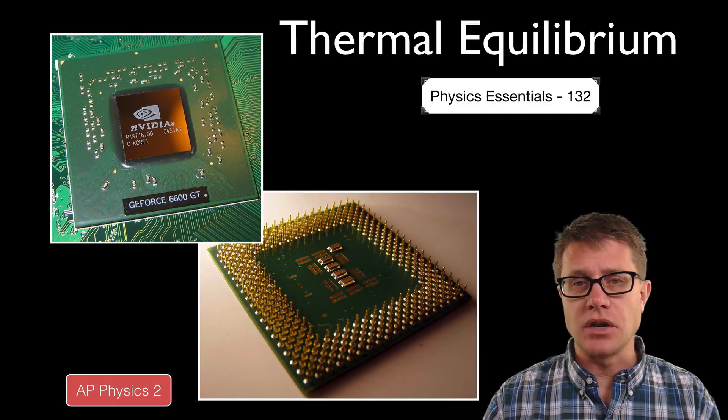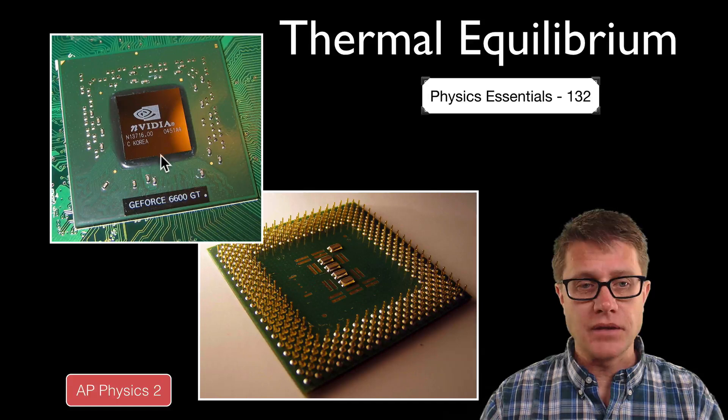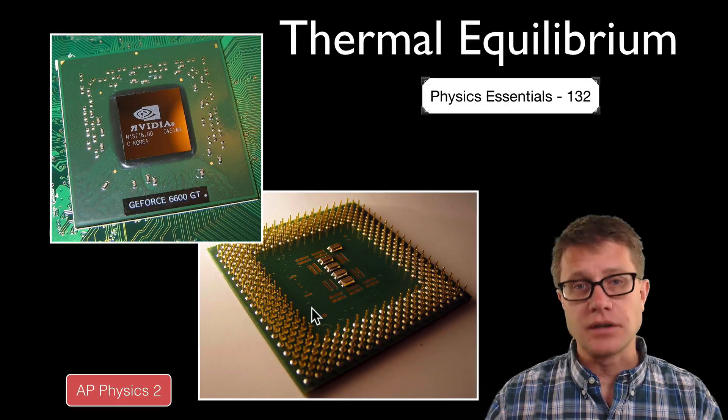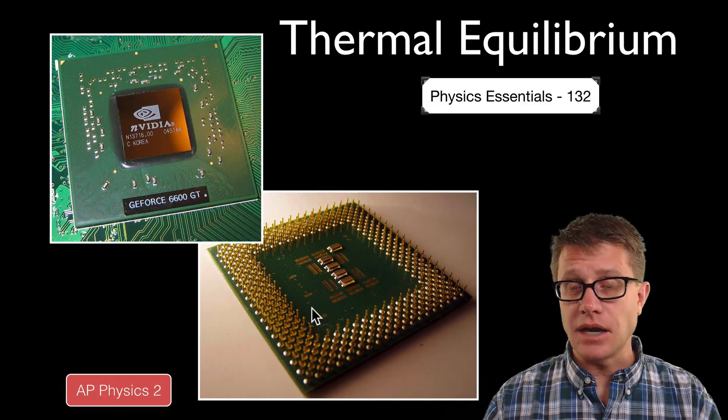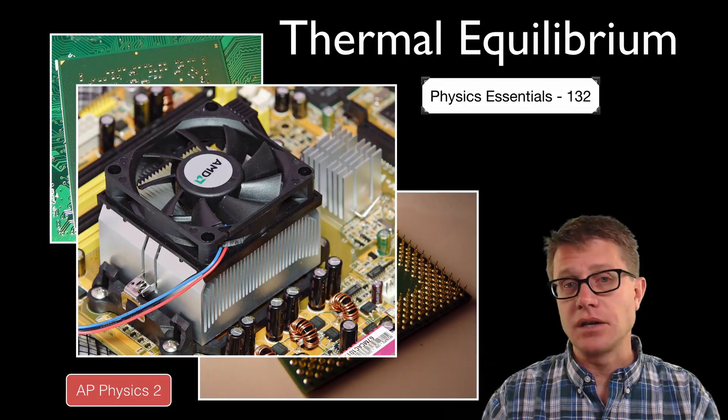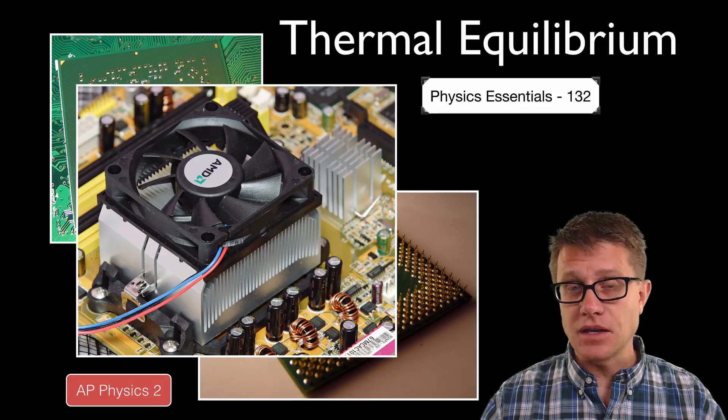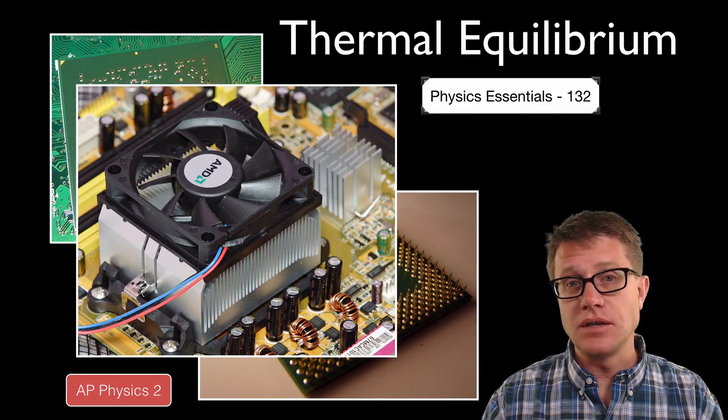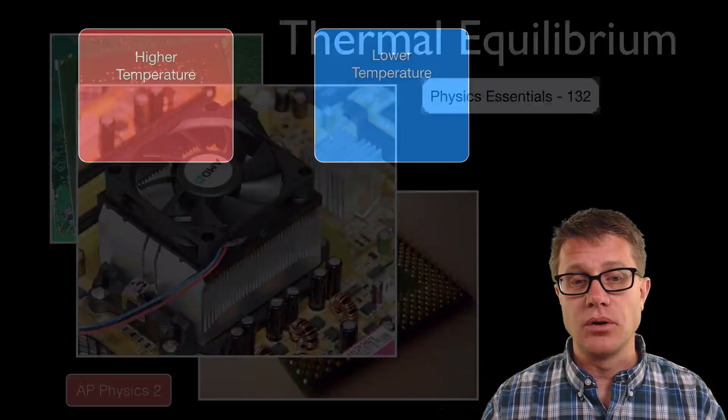Two things in my computer right now that are generating heat are the graphics processor and the CPU. As they do calculations, they generate heat that could damage the computer. So scientists use a cooler object called a heat sink. As it is connected to those processors, it transfers heat to the heat sink, and then often a fan will blow that away.